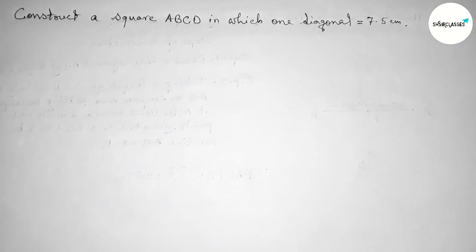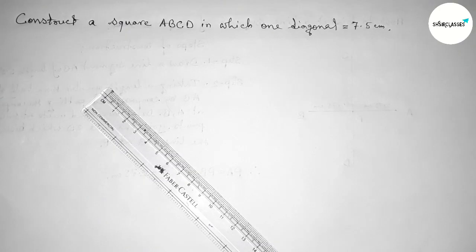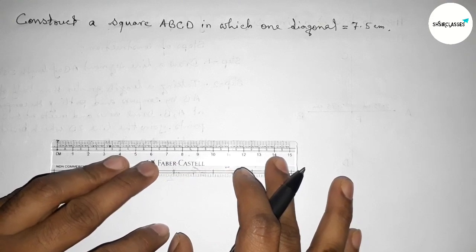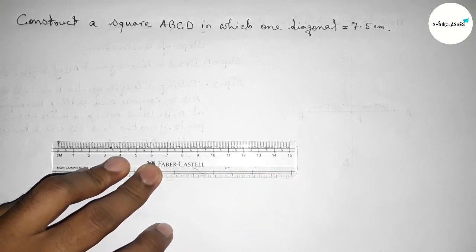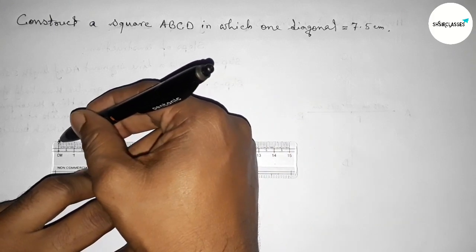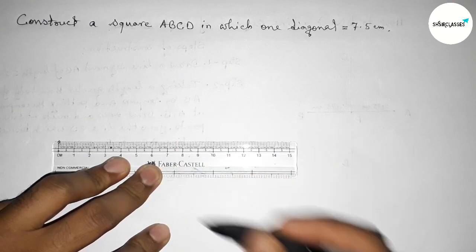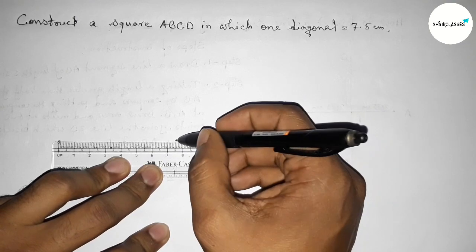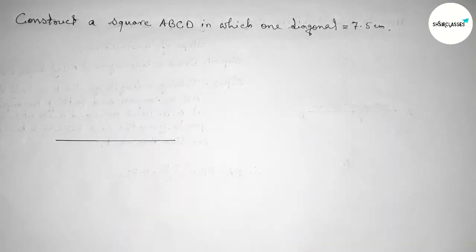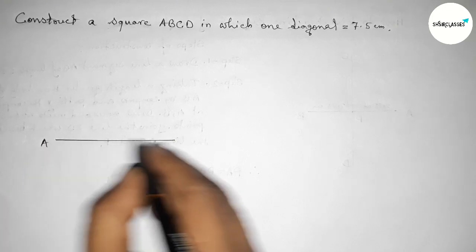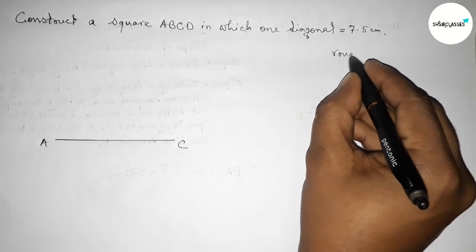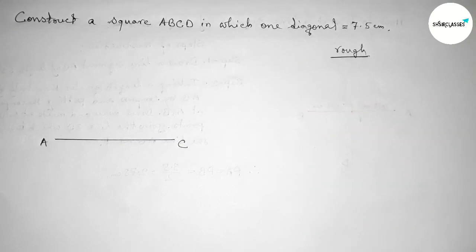Let's start the video. First of all, with the help of a scale, we have to draw a line of length 7.5 centimeters. This is 7.5 centimeters. Now we can label this point A and this point C, so AC equals 7.5 centimeters.